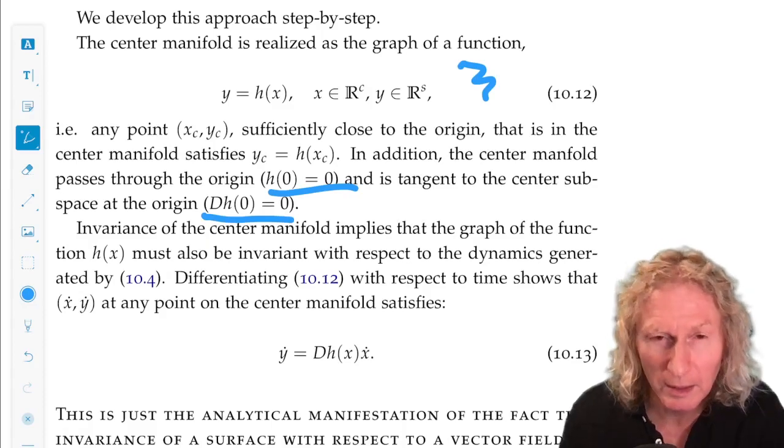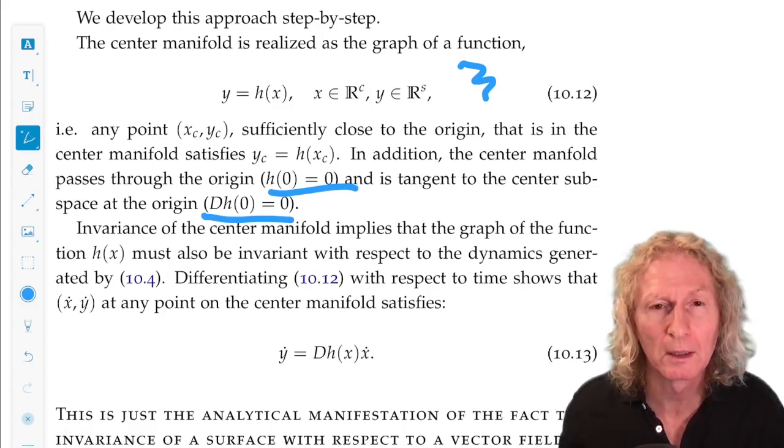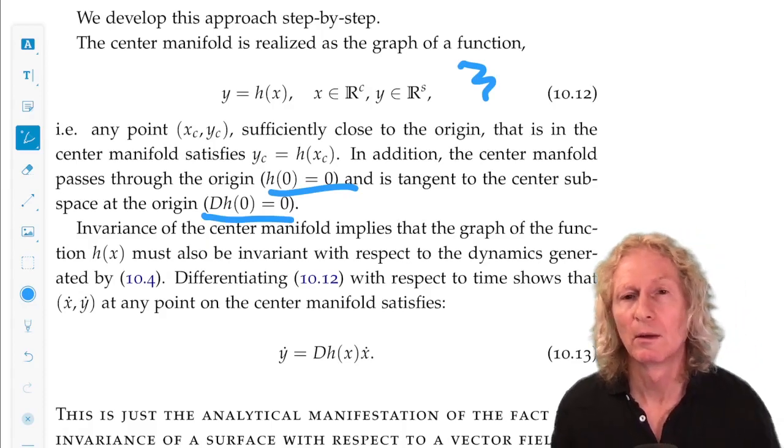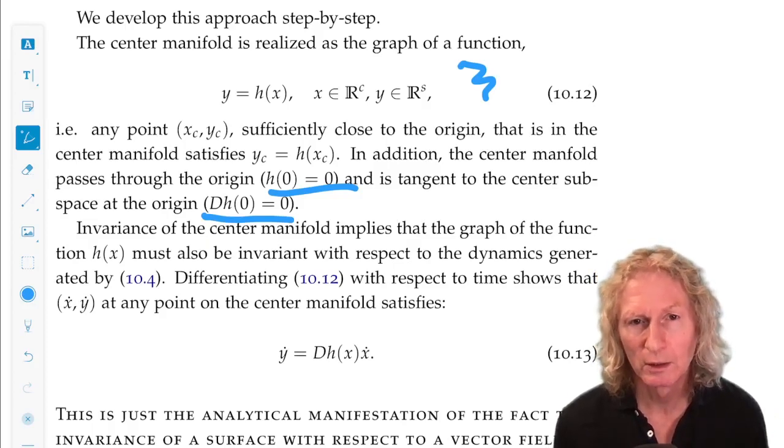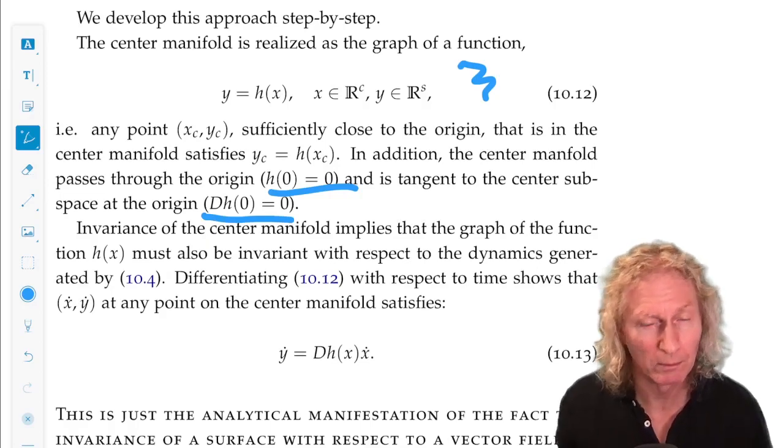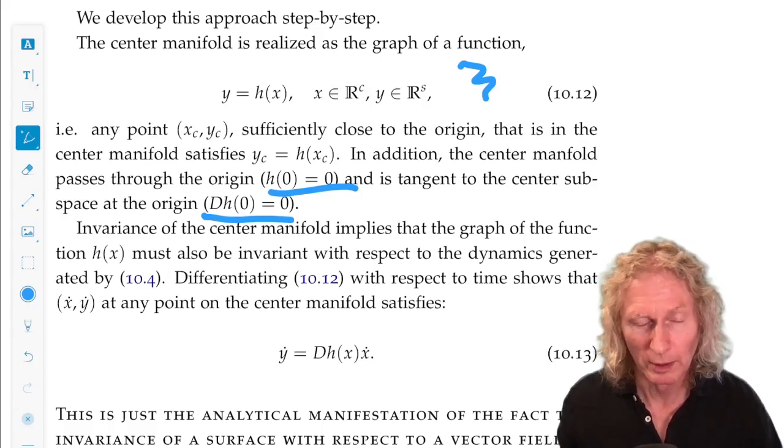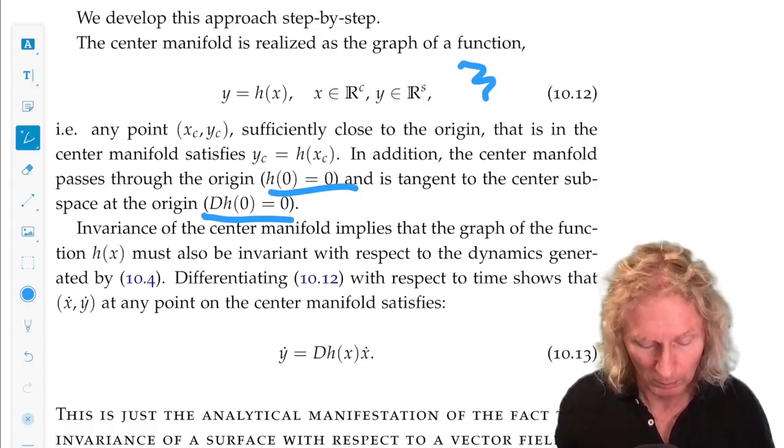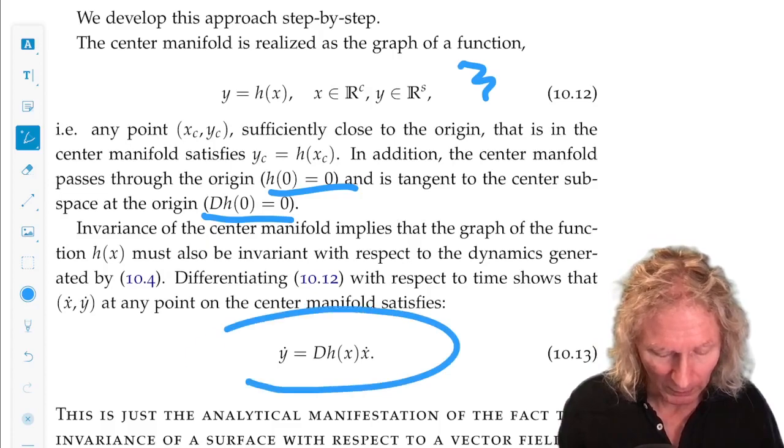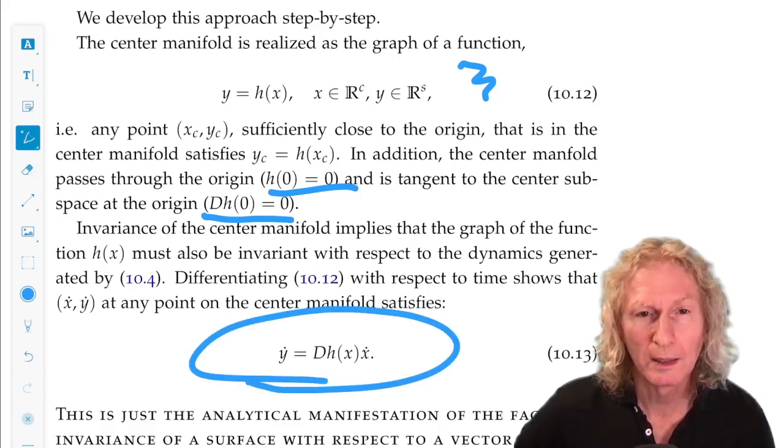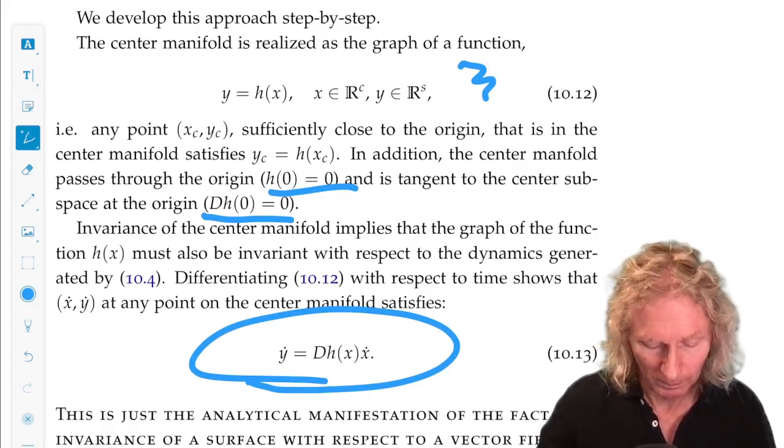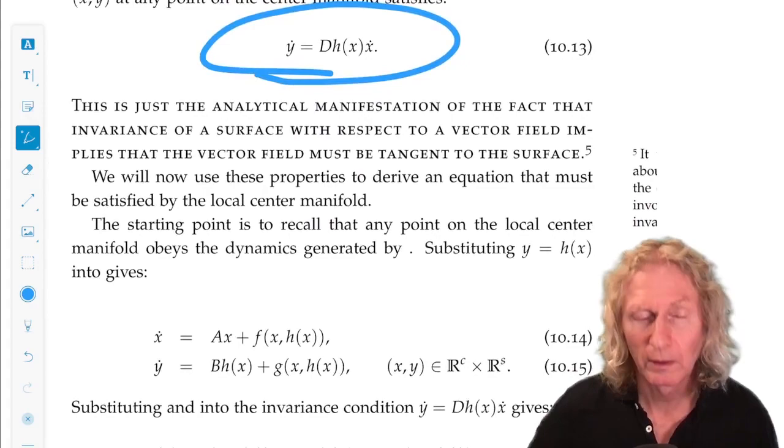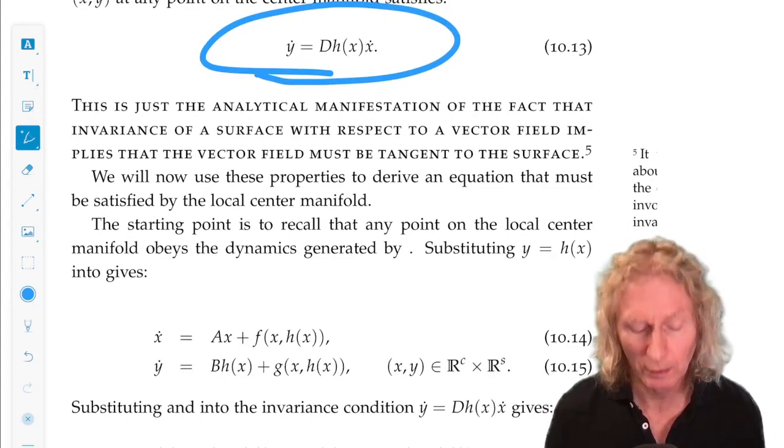But the condition for it being invariant, remember I talked about this early on, is that the vector field is tangent to the invariant manifold. If the vector field is tangent, nothing can get off. It's always trajectories are moving along on the manifold. This is the condition for tangency. y-dot is Jacobian of h of x times x-dot. So, this is the key to deriving an equation for the center manifold.